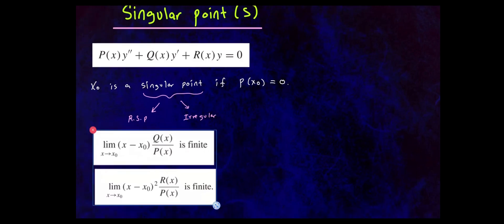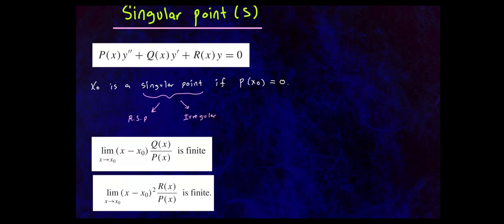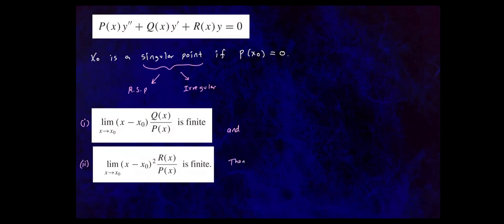Here is the limit definition for a regular singular point. You take two limits approaching that singular point. The first is the limit as x approaches x0 of (x minus x0) times q of x over p of x. If this limit is finite, and the second limit — as x approaches x0 of (x minus x0) squared times r of x over p of x — is also finite, then x0 is a regular singular point.